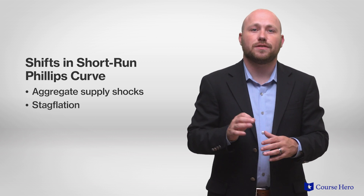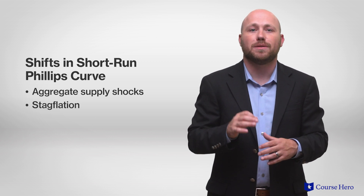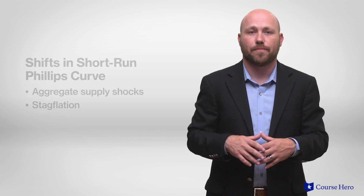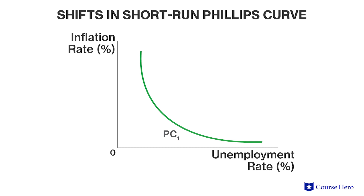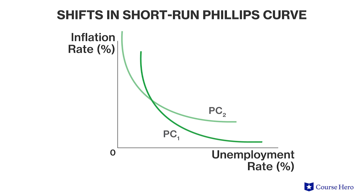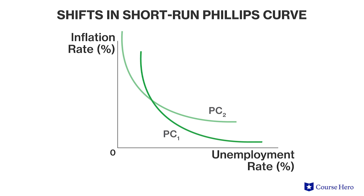Any factor that shifts the aggregate demand curve results in movements along the short-run Phillips curve. An increase in aggregate demand results in an increase in economic output and a corresponding decrease in unemployment. Graphically, the aggregate demand curve shifts to the right and price levels rise. This is depicted as a movement up and to the left of the short-run Phillips curve, because the increase in price levels corresponds with a rise in inflation and the increase in output decreases unemployment.